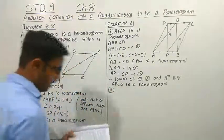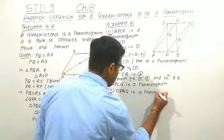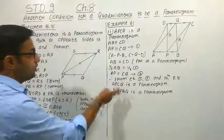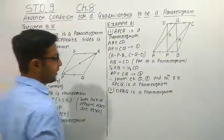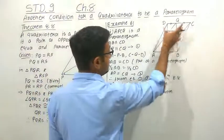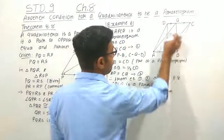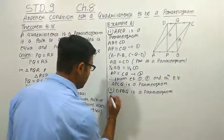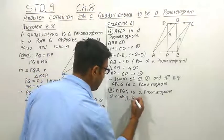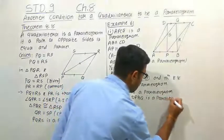The second thing we have to prove is that DPBQ is a parallelogram. As we proved that APCQ is a parallelogram, similarly PB is parallel to DQ and PB is also equal to DQ. So, similarly, we can prove that DPBQ is a parallelogram.